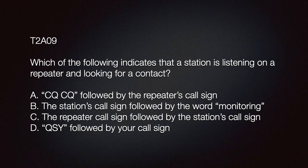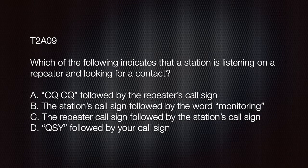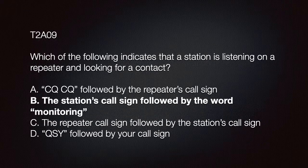The exam question is: Which of the following indicates that a station is listening on a repeater and looking for contact? A: CQ CQ followed by the repeater's call sign; B: The station's call sign followed by the word monitoring; C: The repeater's call sign followed by the station's call sign; or D: QSY followed by your call sign. The correct answer is B, the station's call sign followed by the word monitoring.